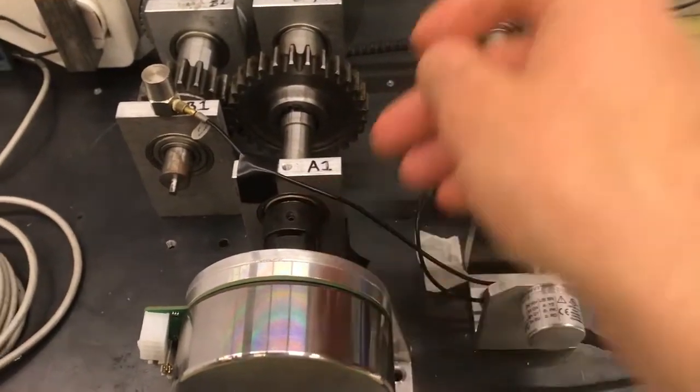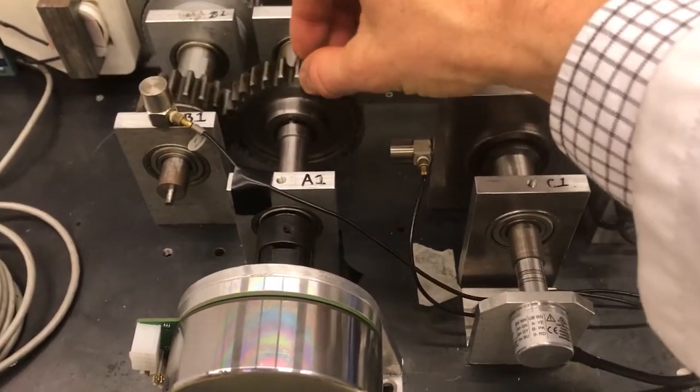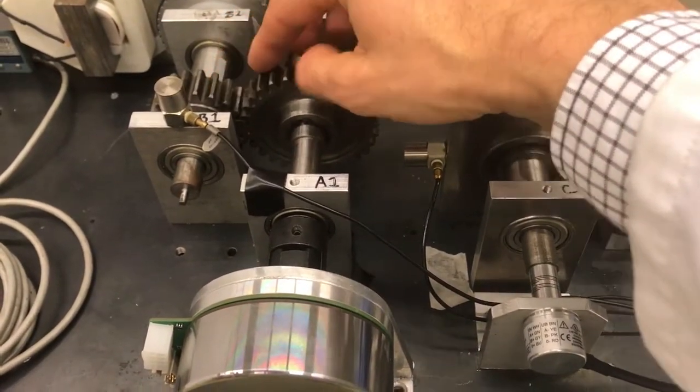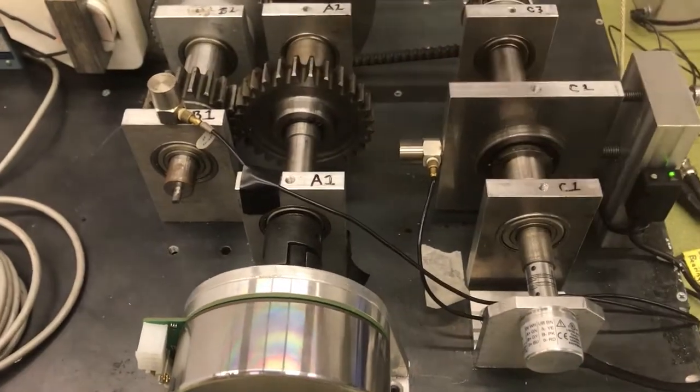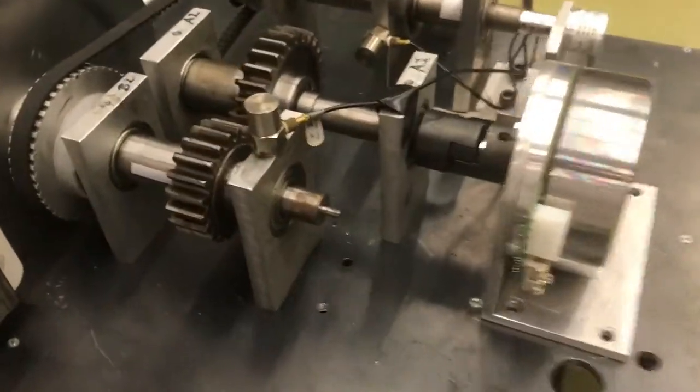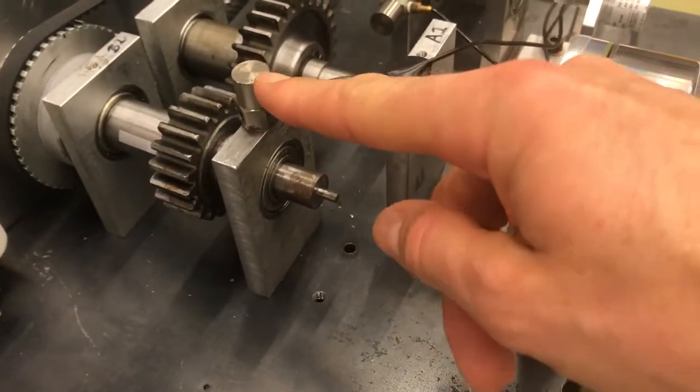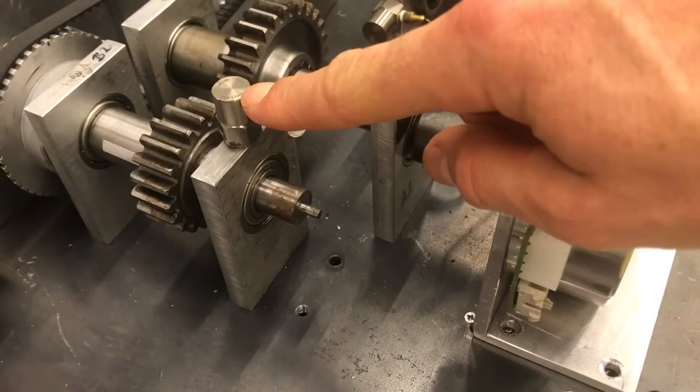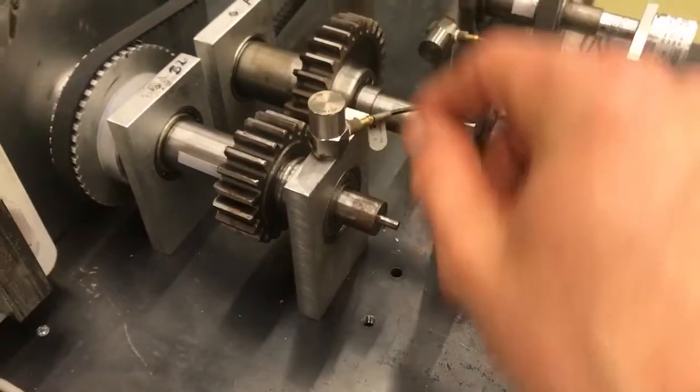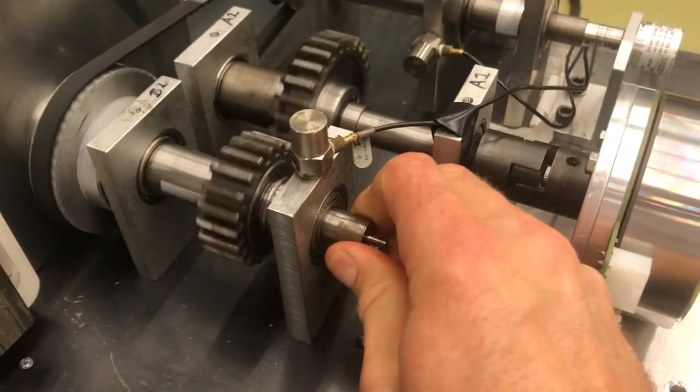In here which you can see this shaft is driving another shaft alongside it through this gear ratio here which is a 2 to 1 gear ratio. As you can see on this bearing housing we have a Piezoelectric accelerometer mounted to this bearing housing.